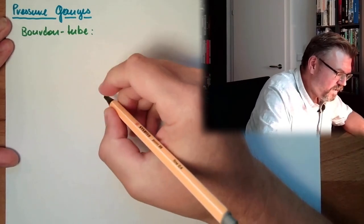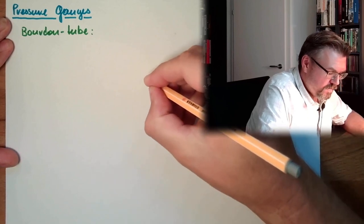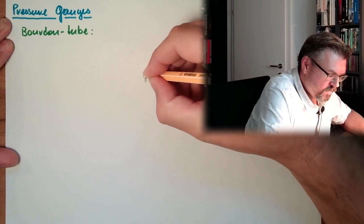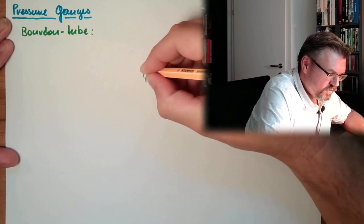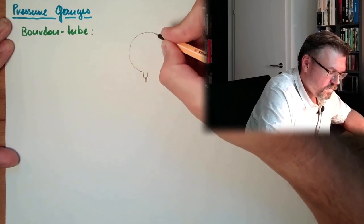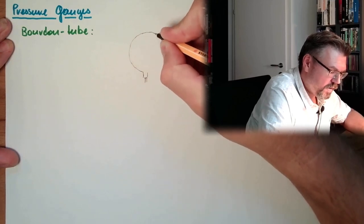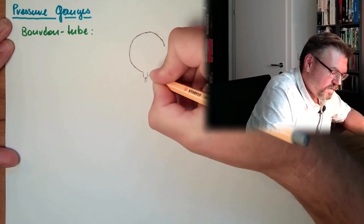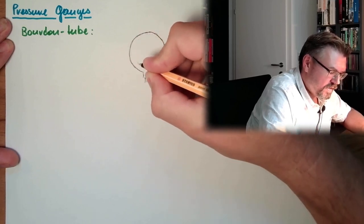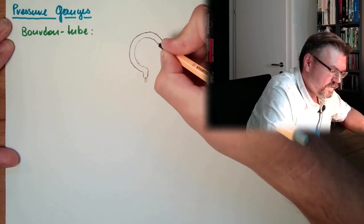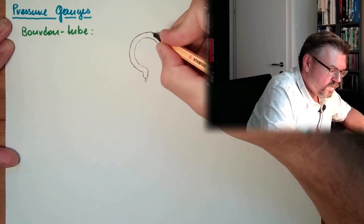Usually we have somewhere a connector. Then we have this tube, which is formed in a special way. Like I said, almost like those party horns, but not exactly. So this is the Rohr-Feder, this is the Bourdon tube.